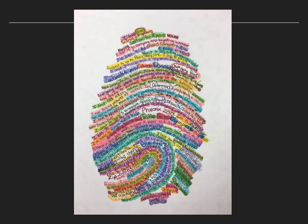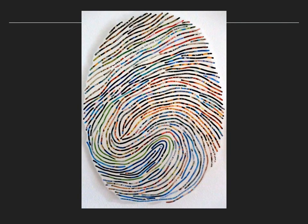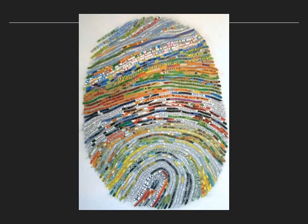Here's another example, similar to the first, where they started adding color over and on top of the text. Both of these used colored pencil and they get a little bit more complex. The next two look like the person used cutouts from magazines and cut them in the shapes of the thumbprint. Some of them don't have a lot of text, but I really would like to see at least 75% or more text.